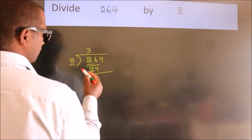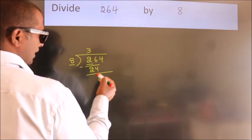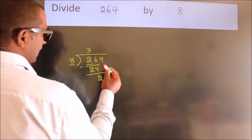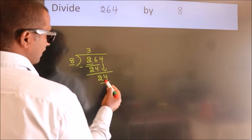Now we should subtract. We get 2. After this, bring down the beside number. So, 4 down. So, 24.